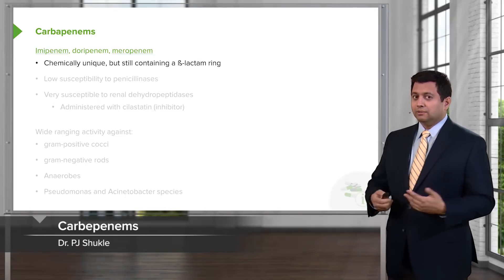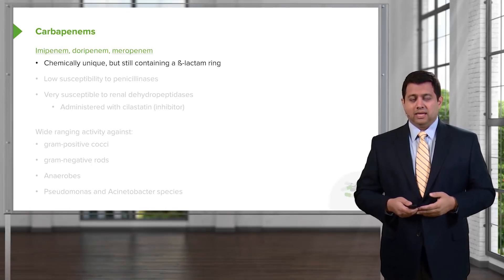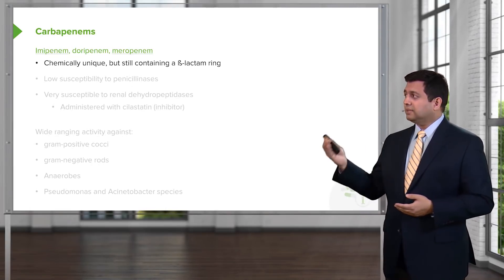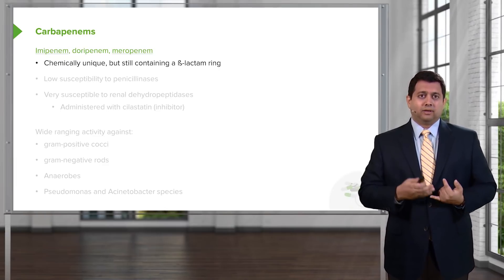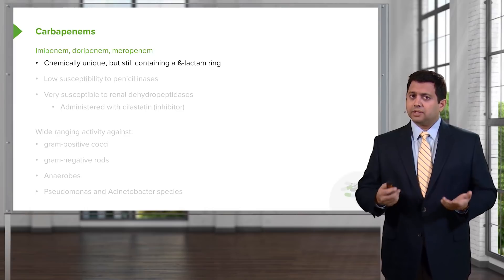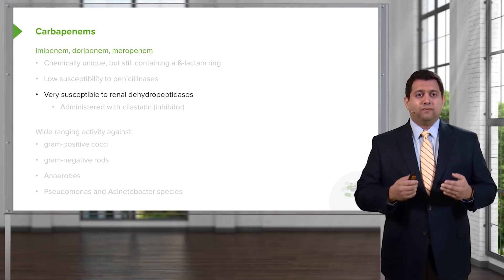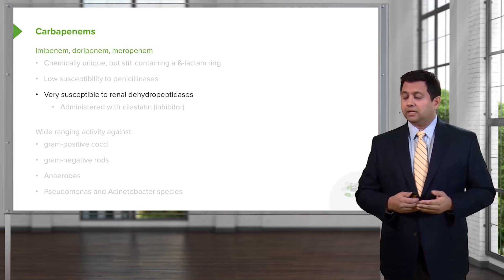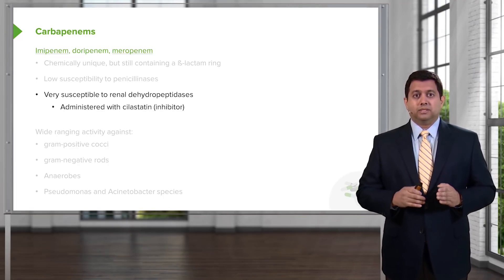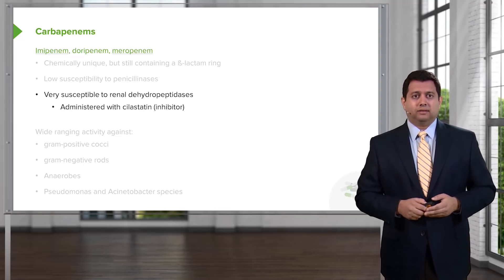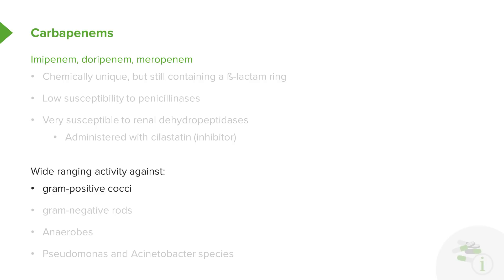Let's move on to the carbapenems — the so-called gorillacillins. They're very, very powerful agents. The prototypical agent is imipenem, and newer ones like meropenem are taking over. These are chemically unique but still contain a beta-lactam ring. They have low susceptibility to the penicillinases, but are very susceptible to renal dehydropeptidases, so you administer them with cilastatin, which is an inhibitor of that enzyme. They have wide-ranging activity against gram-positives, gram-negatives, anaerobes, and most importantly against Pseudomonas. Acinetobacter species are also very responsive to carbapenems.